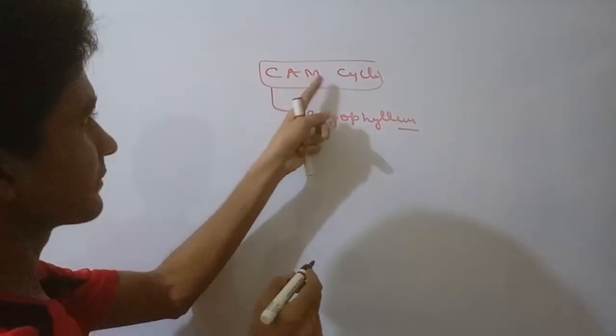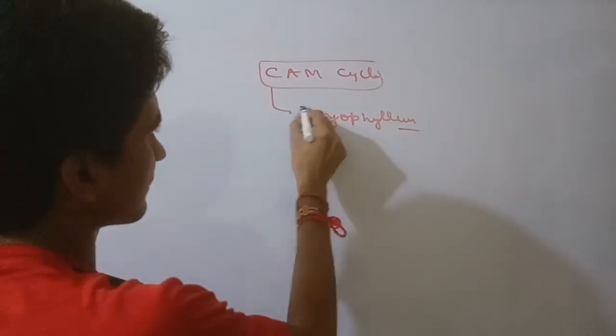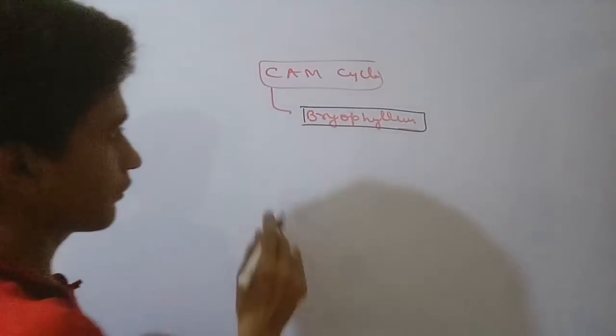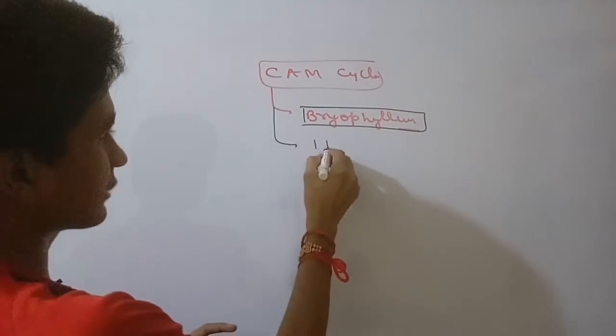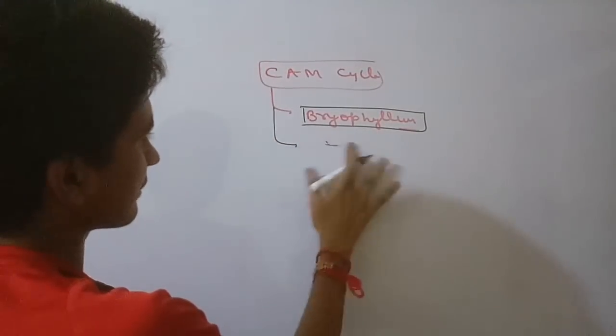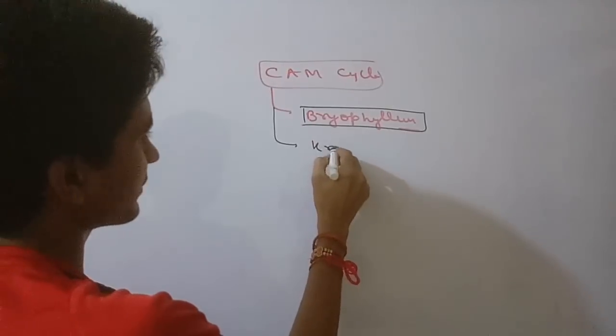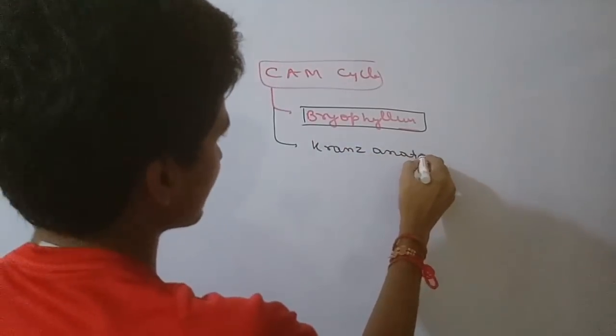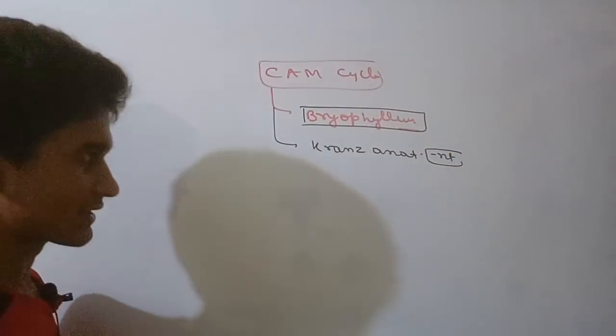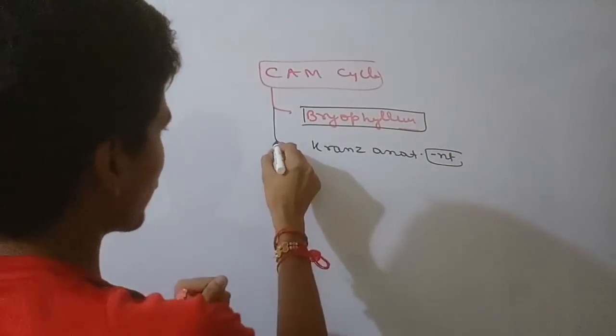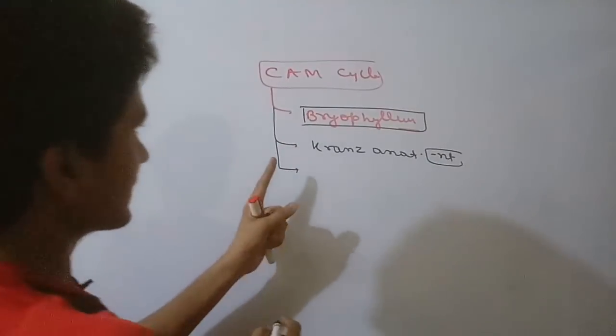CAM cycle full form is Crassulacean Acid Metabolism cycle. It was discovered in Bryophyllum plant. A key type of cell involved is mesophilic cell. According to the anatomy, this cycle is nearly similar to your C4 cycle.